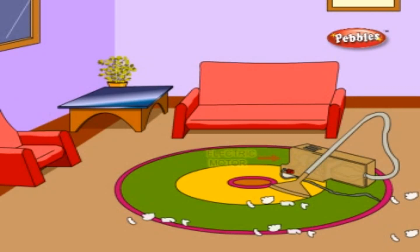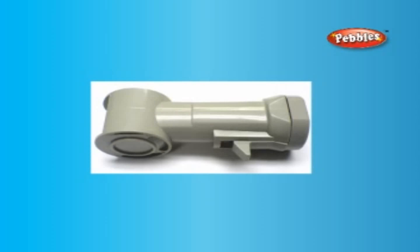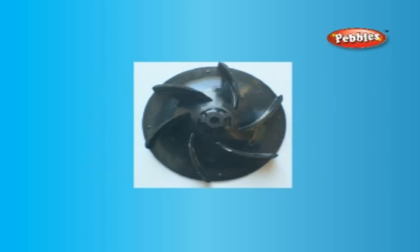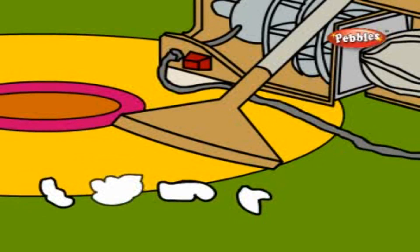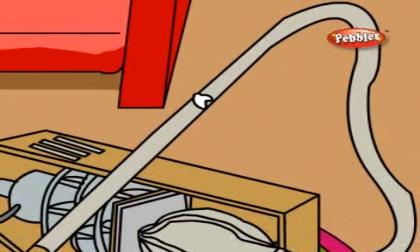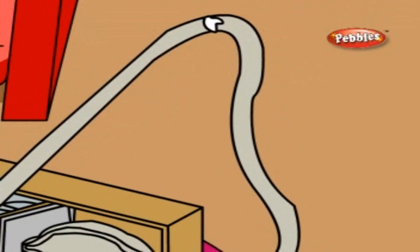Only a few years later, huge vacuum cleaning trucks were built with long hoses. The main part of a vacuum cleaner consists of a power nozzle with a fan and motor. The fan is driven by the electrical motor and produces low pressure, sucking in air along with dust and dirt.